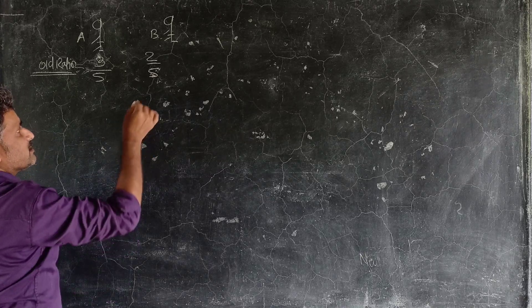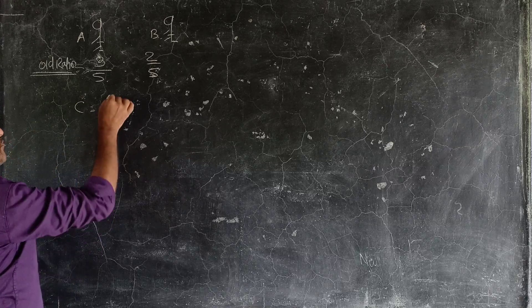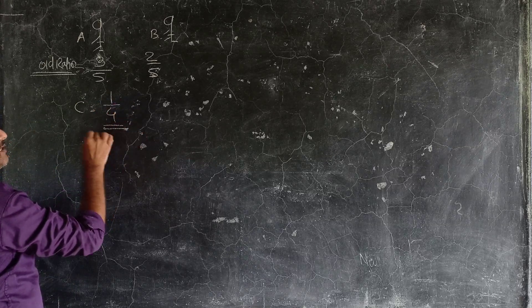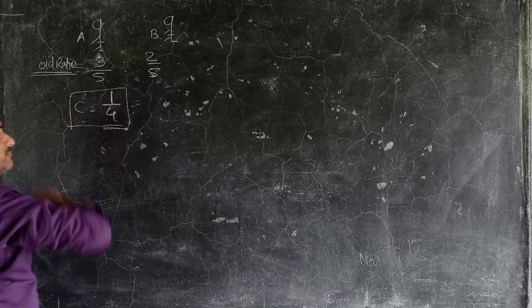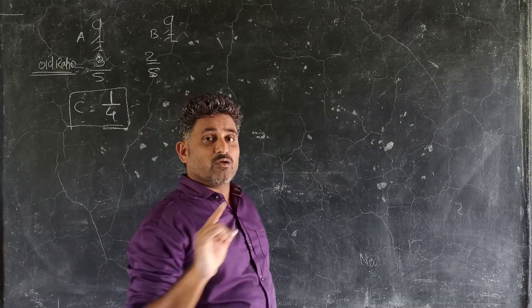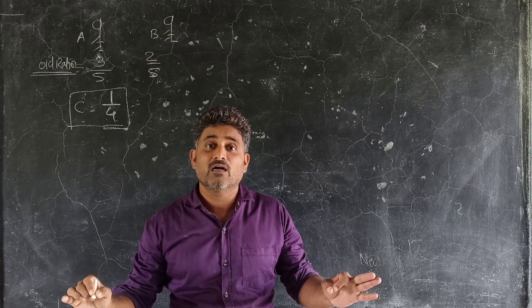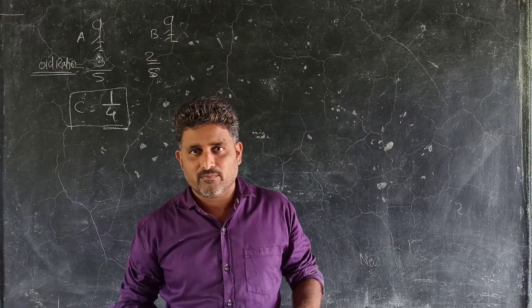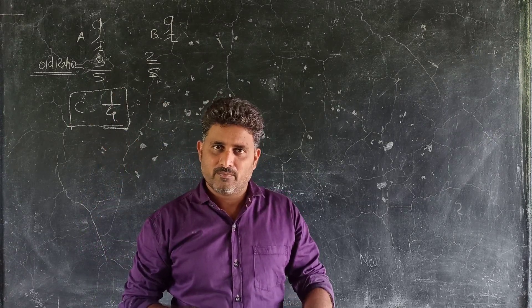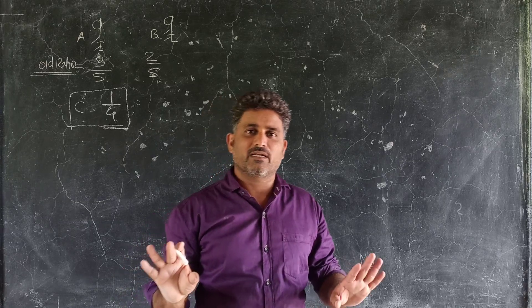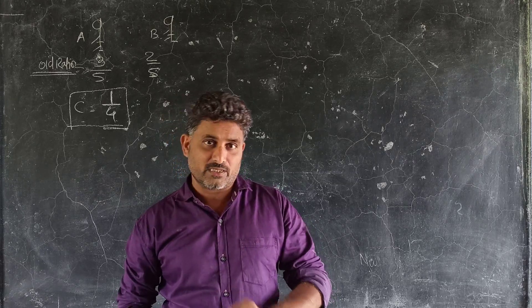The new partner is Mr. C. The new partner's profit sharing ratio is 1 upon 5. First, we have to calculate the new profit sharing ratio.